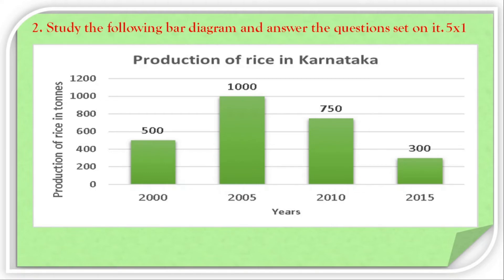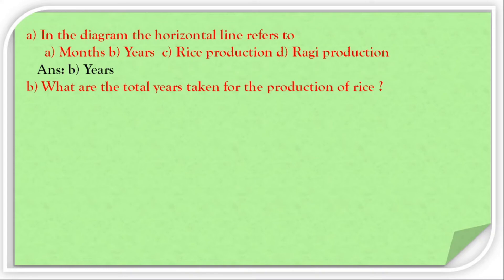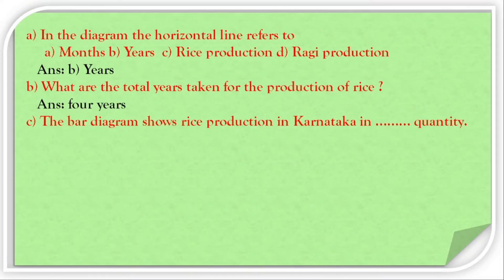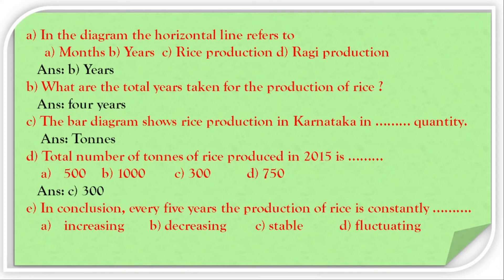Exercise four: Study the following bar diagram and answer the questions. In the diagram, the horizontal line refers to — option A months, option B years, option C rice production, option D ragi production — the correct answer is B: years. Total years taken for the survey: four years. The bar diagram shows rice production in Karnataka. Total tons of rice production in 2015: option A 500, option B 1000, option C 300, option D 750 — the correct answer is 300. Every five years, the production of rice is: fluctuating.